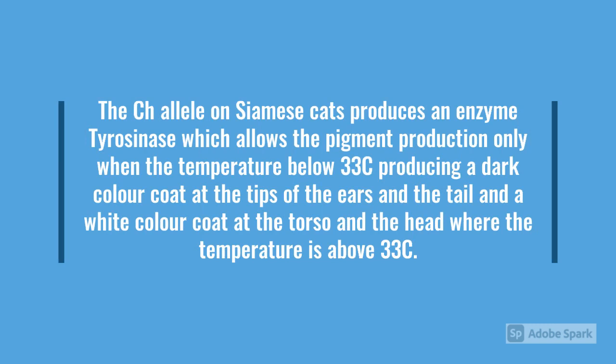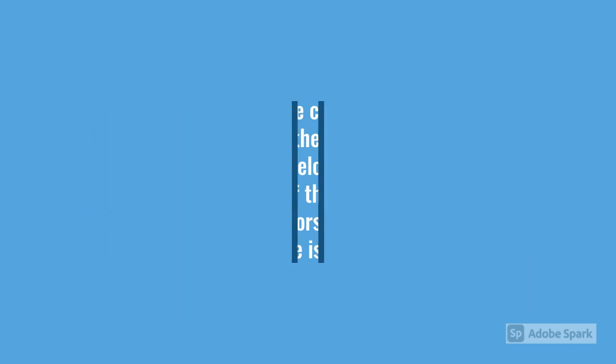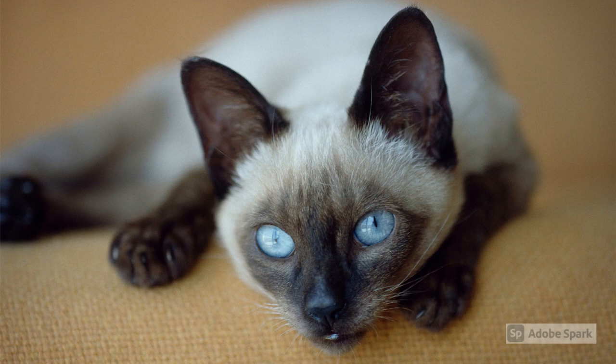Another example is the change in fur color of Siamese cats with internal temperature. The C^H allele in Siamese cats encodes a heat-sensitive version of the enzyme tyrosinase, which is involved in albinism. The C^H version of the enzyme is inactivated at temperatures above 33 degrees Celsius. At the surface of the torso and head, the temperature is above 33°C and tyrosinase is inactive, producing a whitish coat. At the tips of the ears, the temperature is usually below 33°C and the enzyme is active, allowing production of melanin that turns the coat in these areas a dark color.